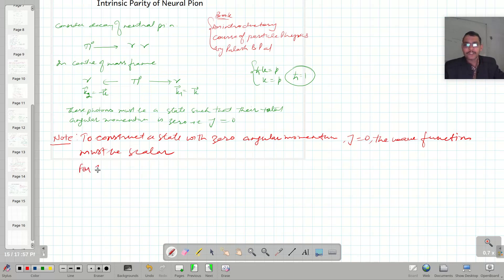But for J equals 1 state, the wave function should be a vector. Our case is for J equals 0. So thus the wave function must be a scalar.